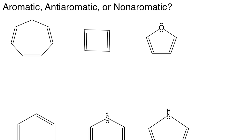Rule number one: the compound needed to be cyclic. Rule number two: the compound needed to be completely flat and conjugated at all points around the cyclic ring, meaning every single point should have no sp3 hybridized carbons or any other atom — nitrogens, oxygens, etc. Rule number three: the compound had to pass Hückel's rule.